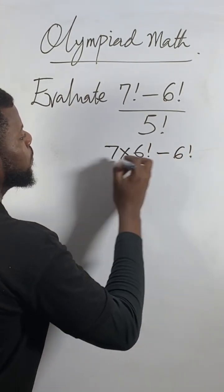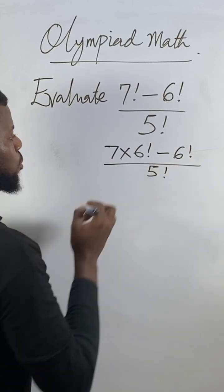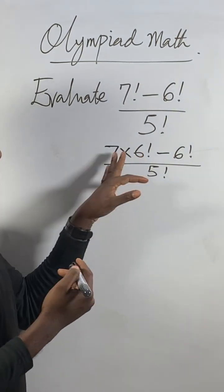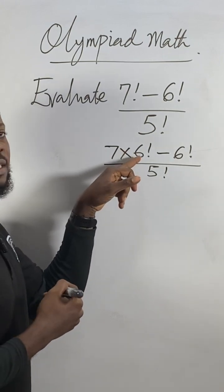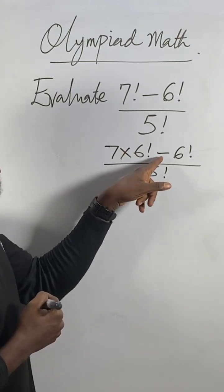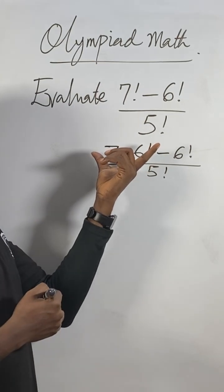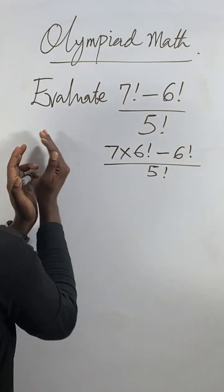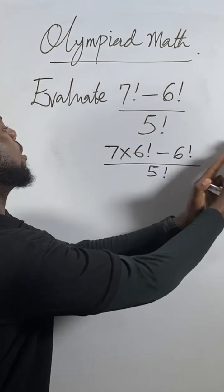We have 7 times 6 factorial minus 6 factorial, all over 5 factorial. Normally in mathematics, if you see 7 times 6, you would multiply them out completely. But since we have minus 6 factorial, we need to factorize.